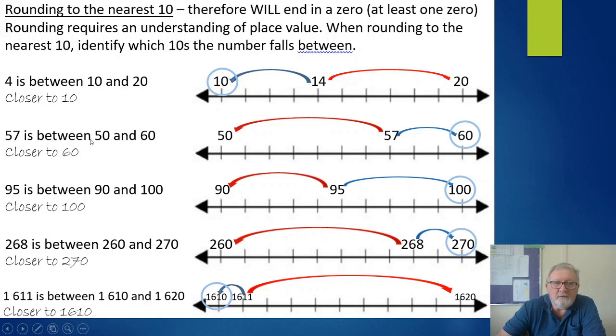57 is between 50 and 60, and the blue arrow shows it's closer to 60, so when we round to the nearest 10 it's rounded to 60. 95 is between 90 and 100 and it's exactly halfway between. But a rule of rounding is when it's halfway we always round up, we always round to the next number.